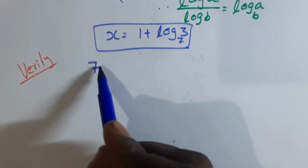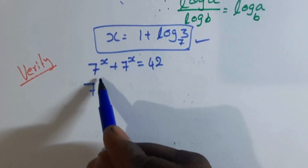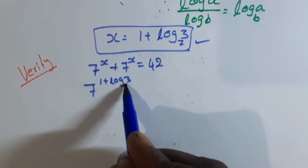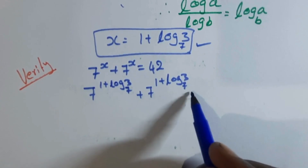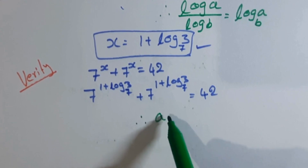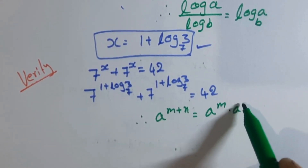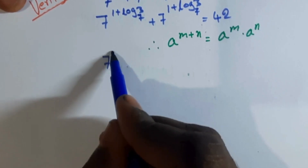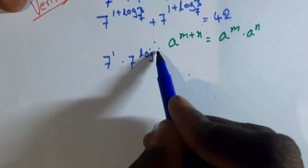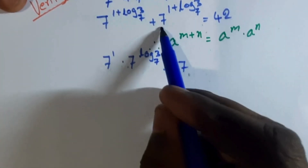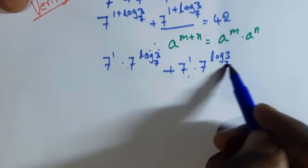Now we verify: 7 to the power of x plus 7 to the power of x equal to 42. Substituting x equal to 1 plus log 3 base 7: 7 to the power of (1 plus log 3 base 7) plus 7 to the power of (1 plus log 3 base 7) equal to 42. Using a^(m+n) equal to a^m into a^n, this becomes 7^1 into 7^(log 3 base 7) plus 7^1 into 7^(log 3 base 7) equal to 42.